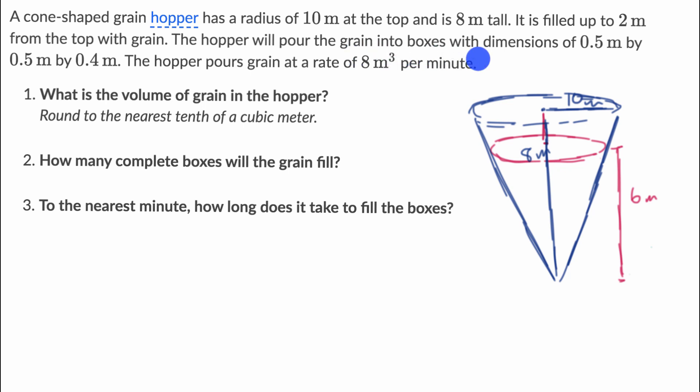The hopper will pour the grain into boxes with dimensions of 0.5 meters by 0.5 meters by 0.4 meters. The hopper pours grain at a rate of eight cubic meters per minute. So the first, quite a lot of information there. The first question is what is the volume of grain in the hopper? So before we even get to these other questions, let's see if we can answer that.